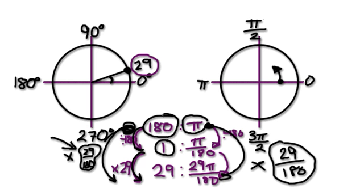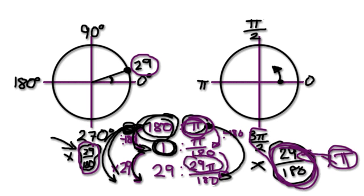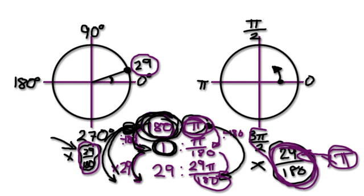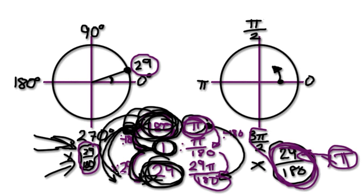So if 29 over 180 is the multiplier, then to jump from pi straight to the answer, you multiply pi by the same multiplier — 29 over 180. That gives you 29 pi over 180. The point is, rather than going from 180 to 1 and then from 1 to 29, just jump in one go: find the multiplier, which is destination divided by original — 29 over 180.